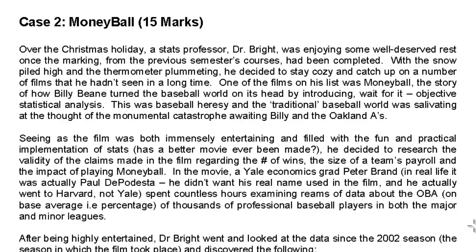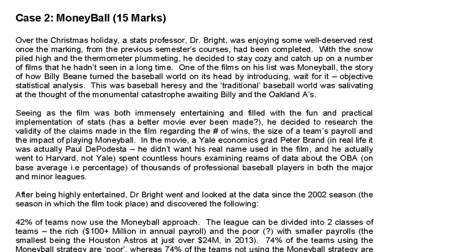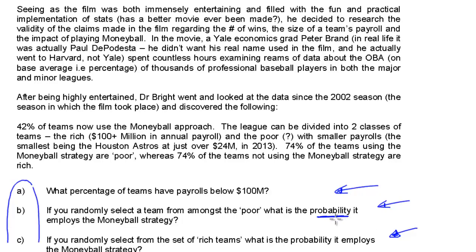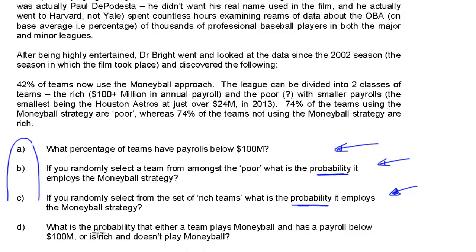In this video, I'm going to show how to solve case number two. Case number two is a chapter six probability question. How do I know that? It comes from having a look at the questions that follow after the setup. Anytime you've been given a question, whether it's an assignment or exam question, it's always going to be these follow-up questions — and there's even a part D down here — that tell you exactly what your focus is going to be. The fact that they're asking for a probability in parts B, C, and D identifies that I'm dealing with chapter six.